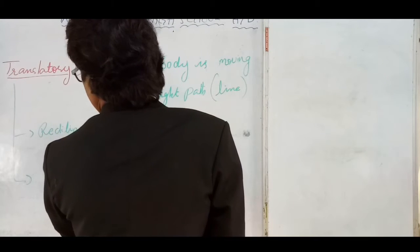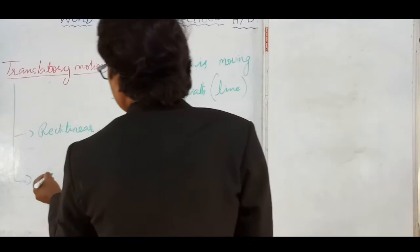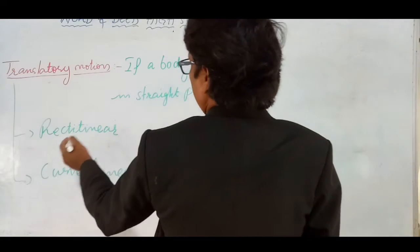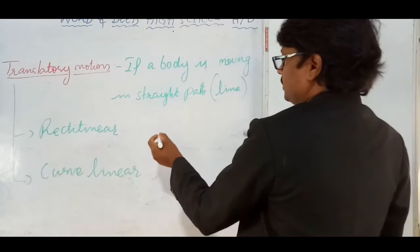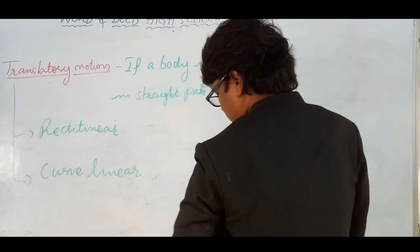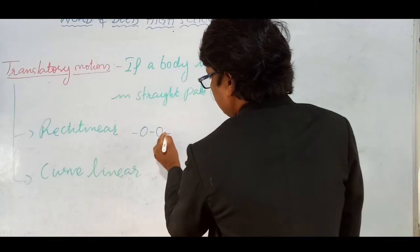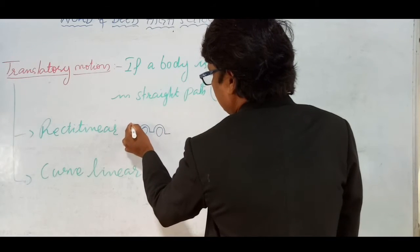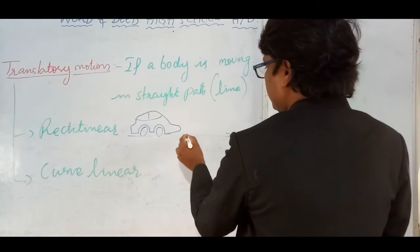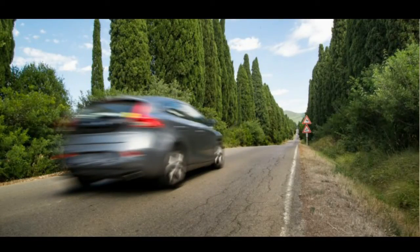One is rectilinear, and another one is curvilinear. The motion of a body may be in rectilinear motion if it is in a straight line. For example, if the car is moving in a straight path, then this car is said to be in rectilinear motion.